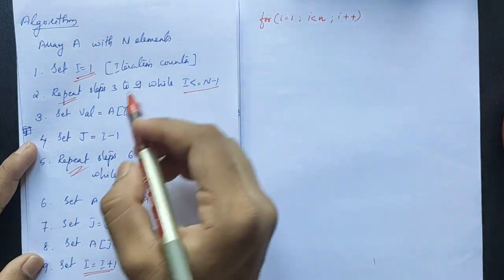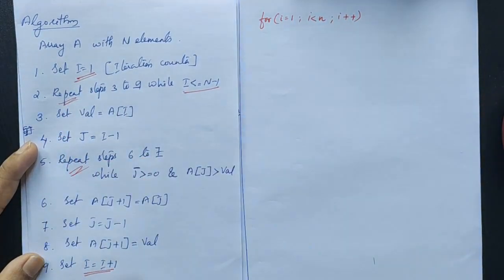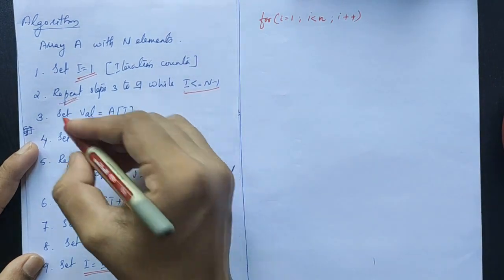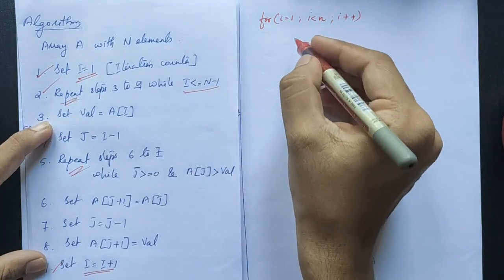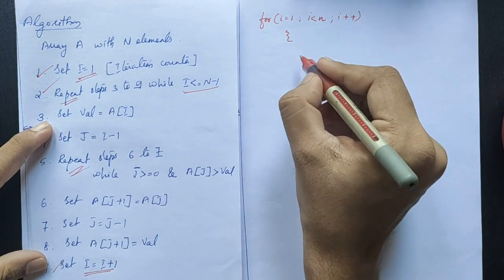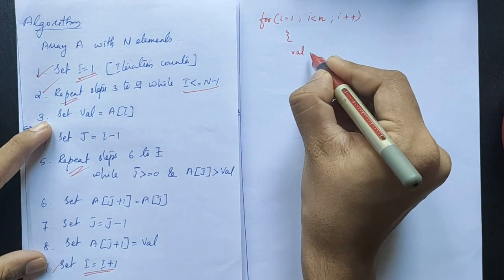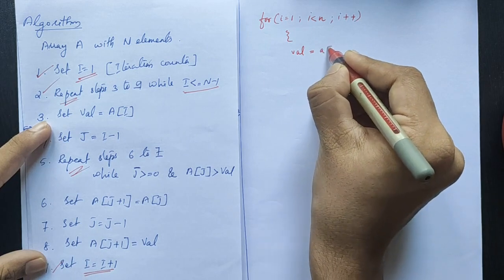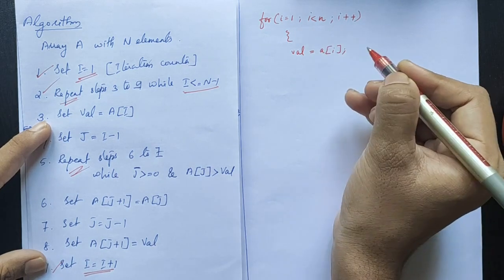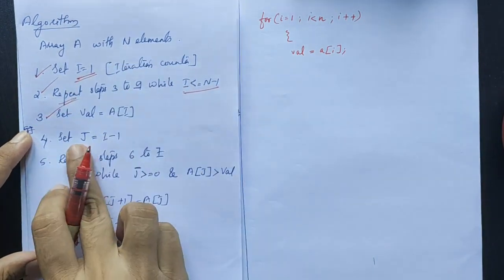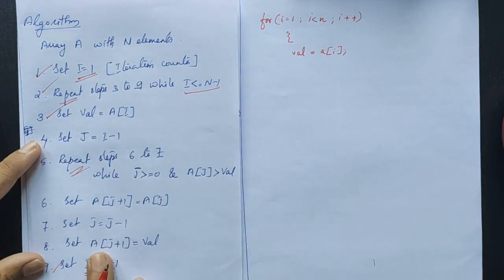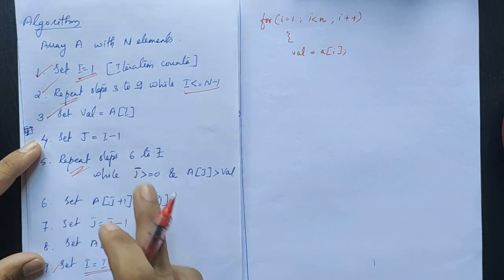Inside the loop, we declare a variable val equal to a of i. Then we need the j loop.